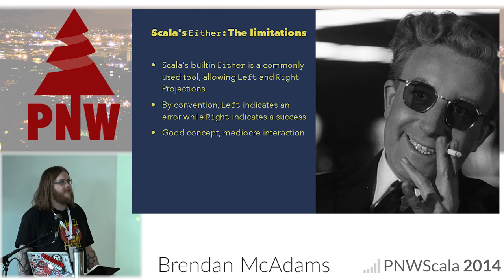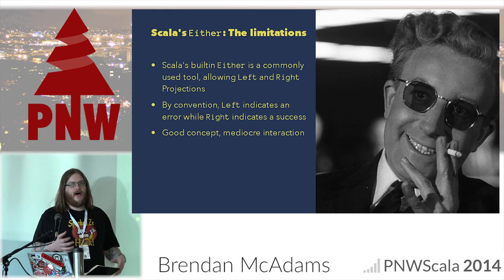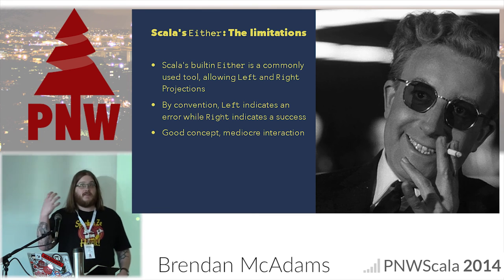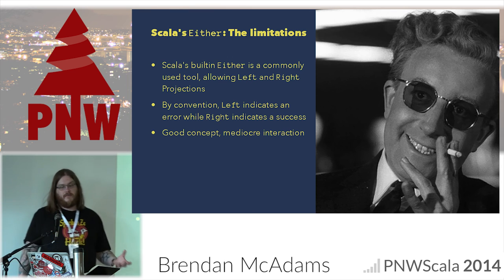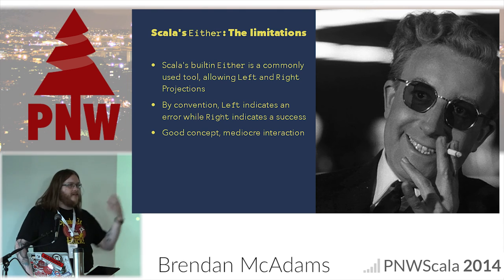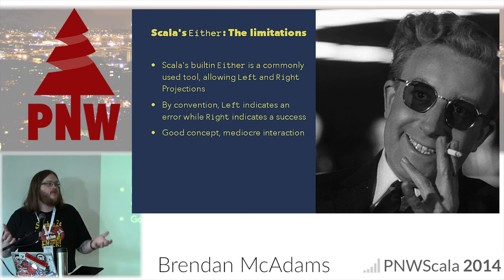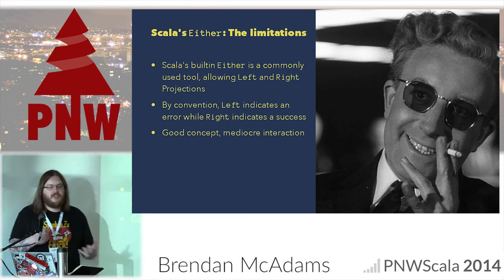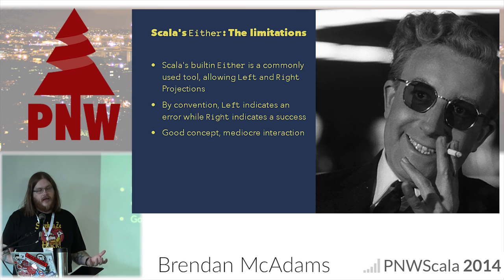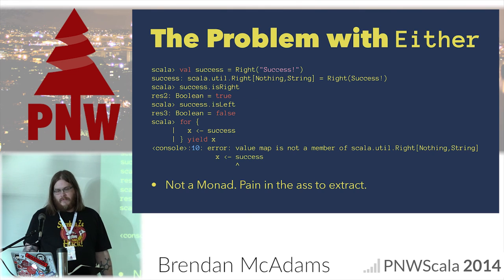The first thing I looked at, because I do a lot of error collecting — a lot of the early work on my team involved working with a Jira API. It was important: did this succeed and give me a successful thing, or did it fail and give me a throwable? Scala has a built-in object called Either. It's pretty commonly used. It's got a left and a right projection. Convention — which means you don't have to do it this way, but most people do — says that left is an error, and right is some kind of success value. And it's a good concept, but it's actually pretty mediocre interaction. It's got some issues.